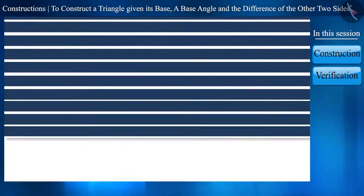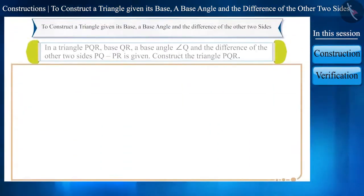So let's see how we will construct a triangle with the given measures. For example, suppose we have to construct a triangle PQR, the length of whose base side QR is given.